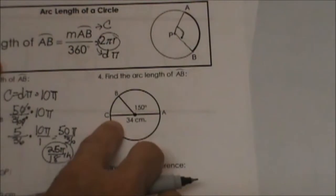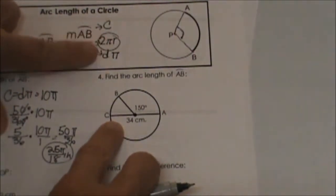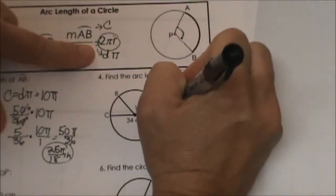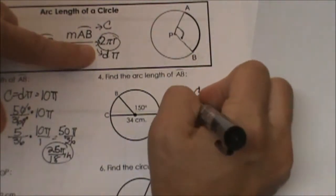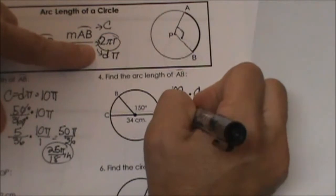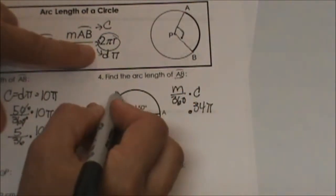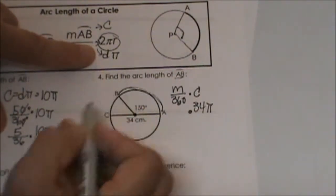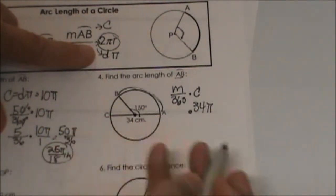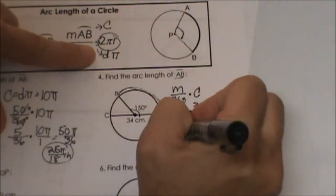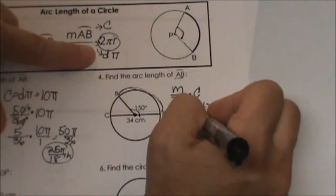This time we are given the diameter. So what is the circumference part of the formula? That is just 34π. So I am going to take the measure over 360 times the circumference. The circumference is dπ, so I am going to stick in a 34π right there. OK, now let us write the angle. We are trying to find the arc length of AB. So what is the measure of that arc? Well, it is the same as the central angle. So it is going to be 150 over 360 times 34π.